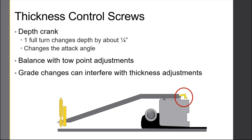Thickness control screws — this is basically a crank on the screed that you can turn to adjust the depth or thickness of the mat. One full turn typically will change the depth by about a quarter of an inch; it also changes the attack angle. If your paver operator makes a change at the toe point at the same time your screed man turns the crank on the back, you've made two changes — make sure those two are in very close communication. Some newer pavers don't come with a crank on the back — everything is controlled by the paver operator up on the tractor unit.